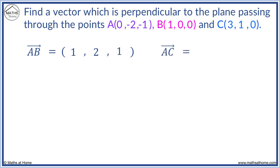AC equals 3 minus 0 equals 3, 1 minus -2 equals 3, and 0 minus -1 equals 1.